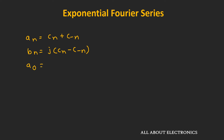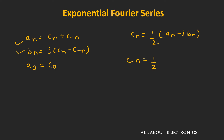Additionally, a0 equals c0. Solving these two expressions, we can find cn and c−n in terms of an and bn: cn equals (1/2)(an − j·bn), and c−n equals (1/2)(an + j·bn). In this way, we have found the relationship between the coefficients of the trigonometric and the exponential Fourier series.